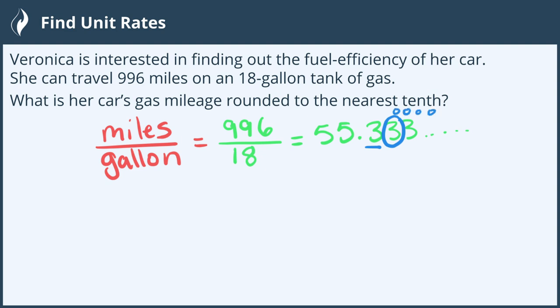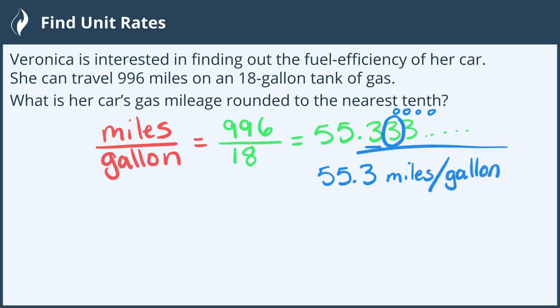This gives our answer of 55.3 miles per gallon for Veronica's fuel efficiency of her car. And now we're all done!